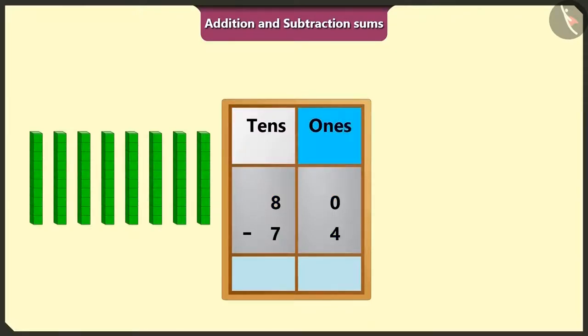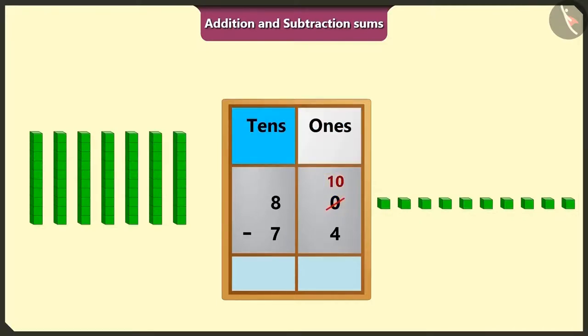First of all, we will do subtraction of numbers of the box of ones. Here, we cannot subtract 4 from 0. So, we will borrow 1 ten from 8 tens. Now, it will be 10 ones in place of 0 in the box of ones and 7 tens in the place of 8 tens in the box of tens.